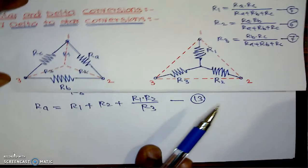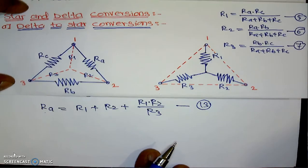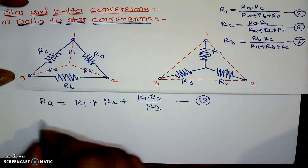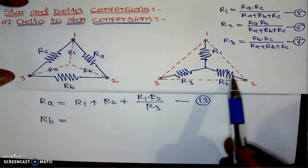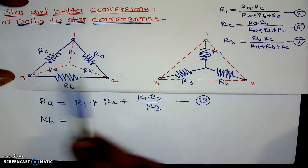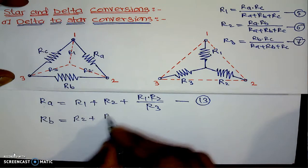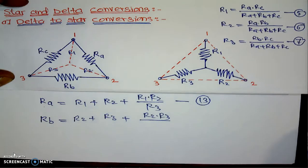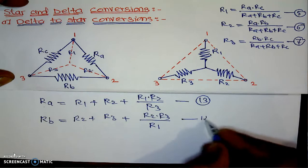In a similar way, we can write the remaining equations. Rb is the resistance connected between R2 and R3. Its value is R2 plus R3 plus R2 into R3 divided by the remaining resistance R1. This is equation number 14.